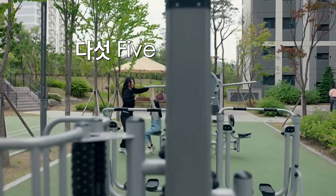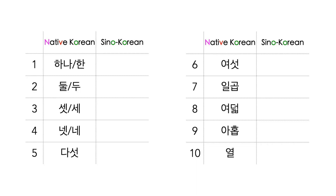When numbers 1 to 4 — 하나, 둘, 셋, 넷 — are used with counters, they are changed to 한, 두, 세, 네. For example, one person is 한 명 instead of 하나 명.